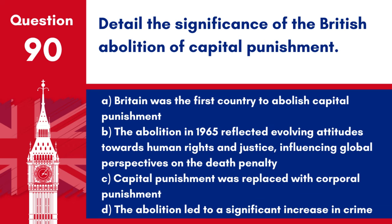Question 90: Detail the significance of the British abolition of capital punishment. The abolition in 1965 reflected evolving attitudes towards human rights and justice, influencing global perspectives on the death penalty. The move away from capital punishment in Britain is part of a broader trend towards more humane forms of justice.